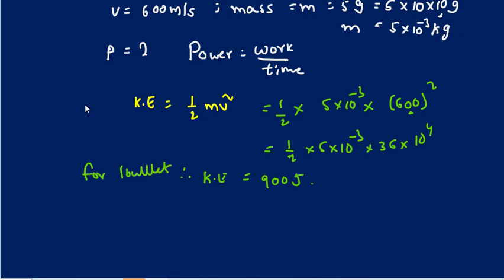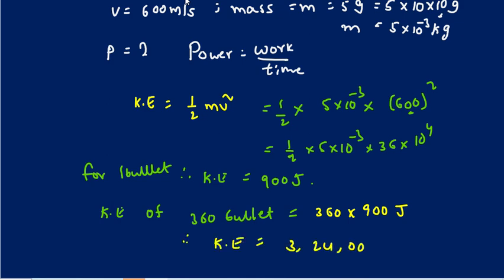But we have 360 bullets in one minute. So the total kinetic energy of 360 bullets equals 360 times 900 joules, therefore kinetic energy equals 324,000 joules.